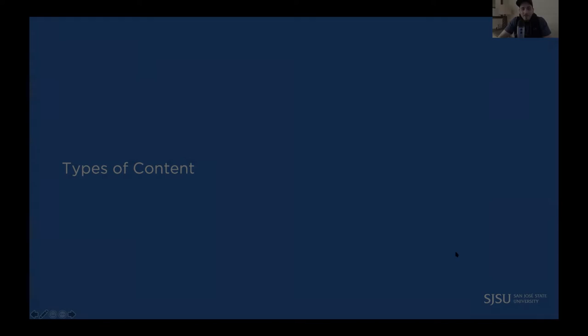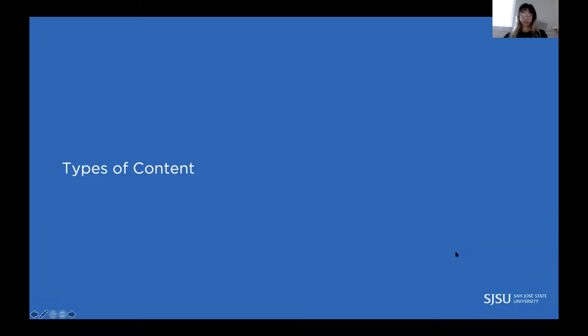Let's recap a little bit of what we've learned to date and make it applicable to what we're talking about right now — content. The first couple of weeks we talked about PESO. We defined paid, earned, shared, and owned. What's the common thread that aligns paid, earned, shared, and owned media? Content.